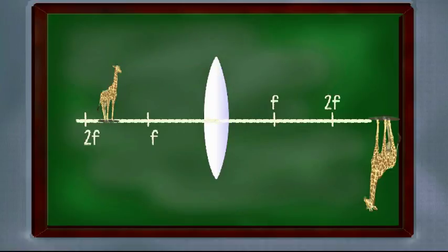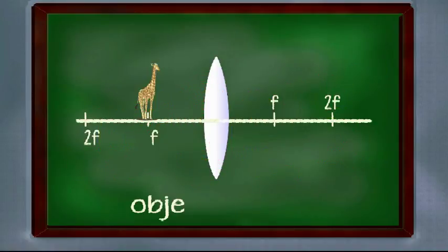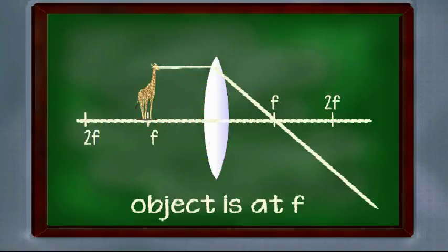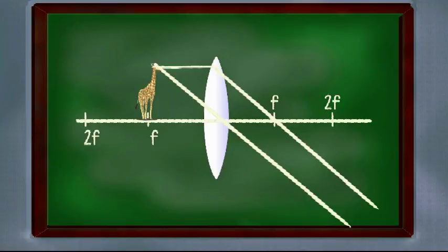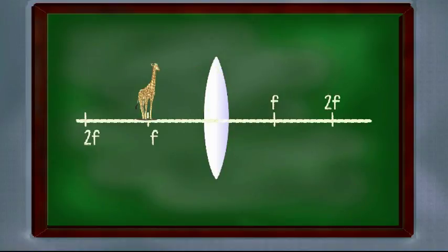Case 5, when object is at f focus. Now this is exactly inverse of the first case when object is at infinite distance. Now here object is at focus and the image will be at infinite distance.